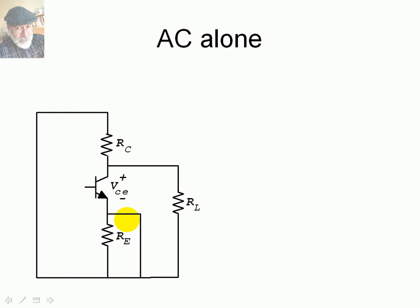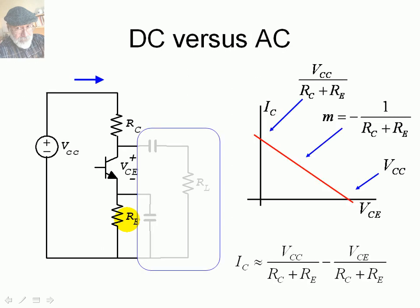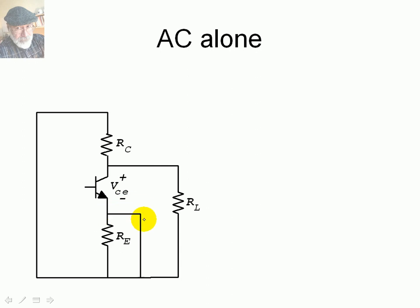Now let's analyze the circuit in AC using superposition. So far we analyzed with the DC supply only. Now we do the other part of superposition — analyzing with the AC signal only. For that, we kill the DC power supply: Vcc is zeroed and those capacitors are shorted. This means resistor RE is bypassed by the shorted capacitor, so there is no current in RE and it is no longer part of the circuit.